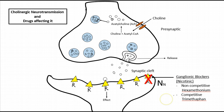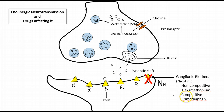Drugs that inhibit nicotinic receptors in the autonomic ganglia are called ganglionic blockers. Examples include hexamethonium, which is a non-competitive blocker, and trimethaphan, which is a competitive blocker.